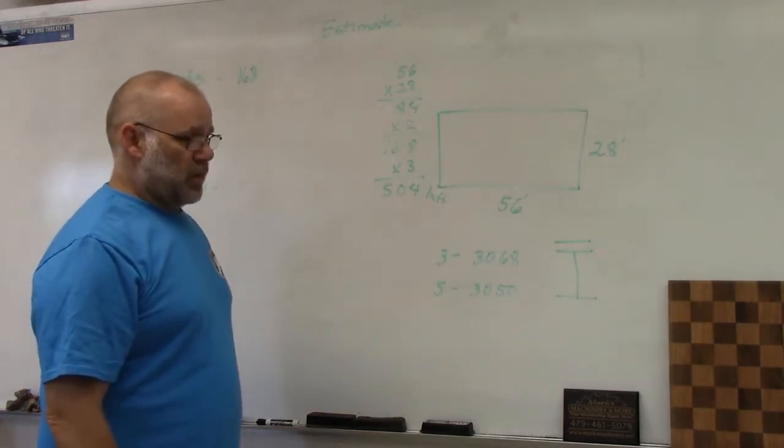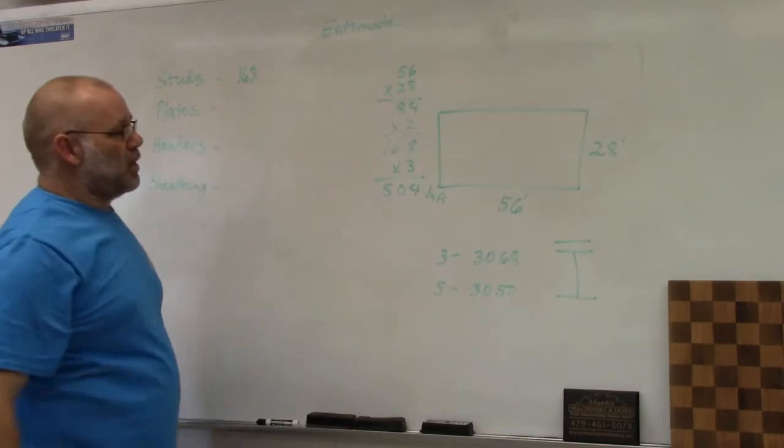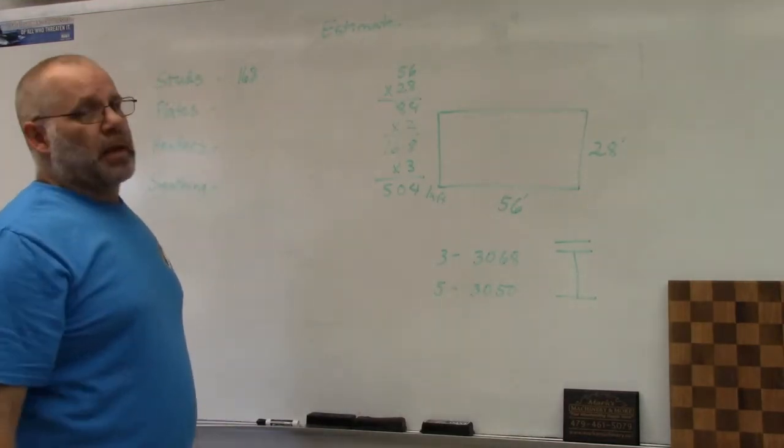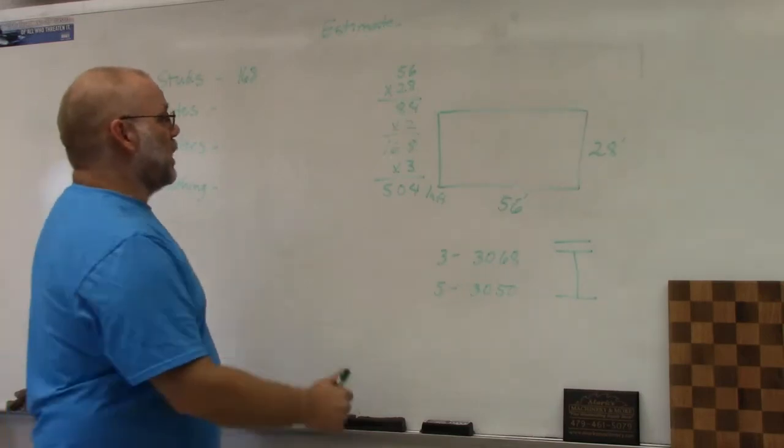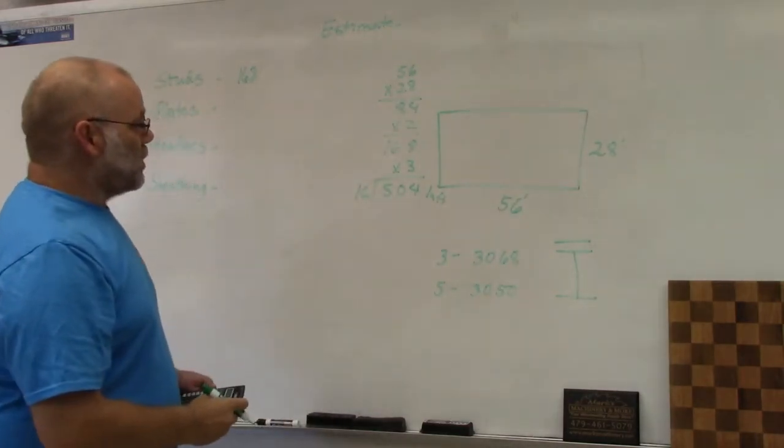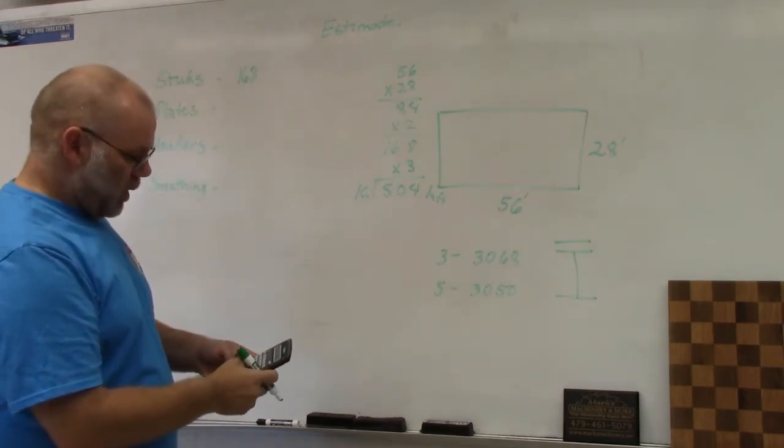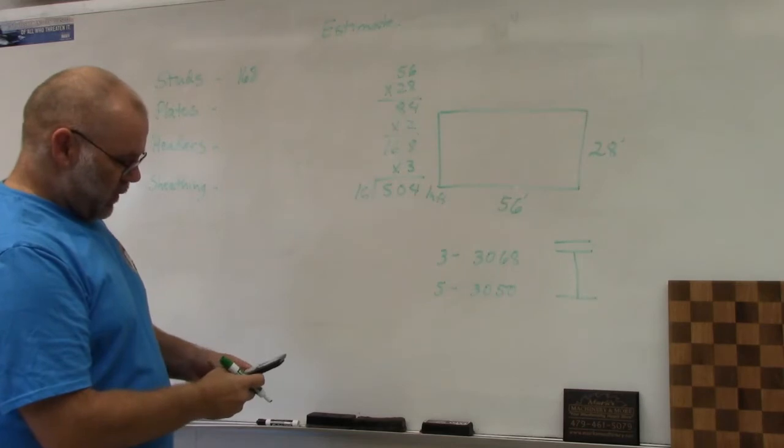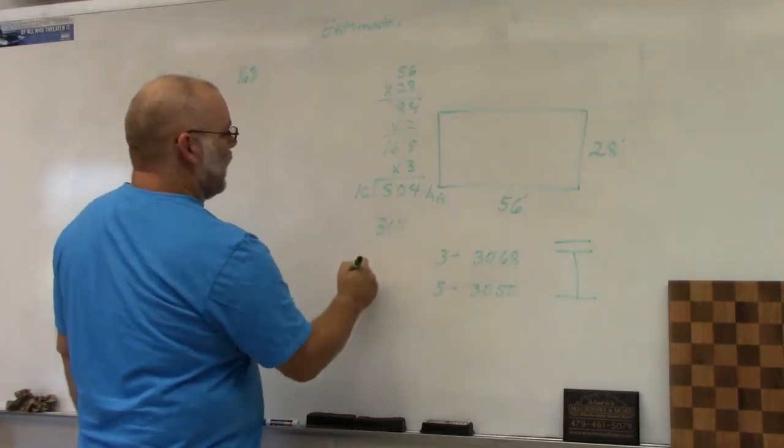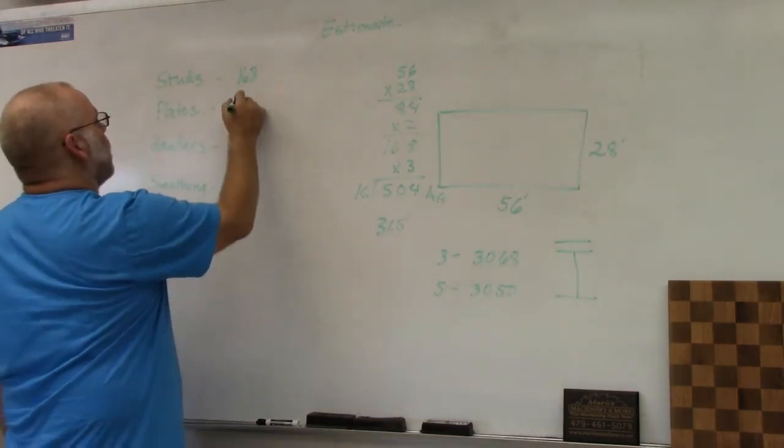Now we need to know how many pieces that is. We're going to divide this by whatever length we want our plates. We'll use 16-foot plates. So 504 divided by 16 foot plates gives us 31.5 boards, so we'll round that up and call it 32.